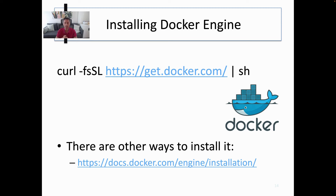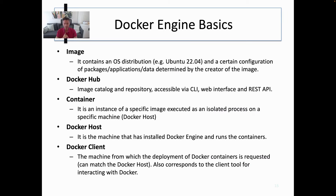It's very easy to install Docker by issuing a Docker URL and piping it into a shell command, but there are of course other ways to install it using the documentation. A few key concepts: the image contains an OS distribution and libraries — not the whole operating system. Docker Hub is the image catalog and repository. A container is an instance of a specific image executed as an isolated process. The Docker host is the machine that has Docker Engine installed and runs the containers. The Docker client is the machine from which the deployment of Docker containers is requested. You can use the same machine as both host and client, or execute remote containers on a different Docker host.